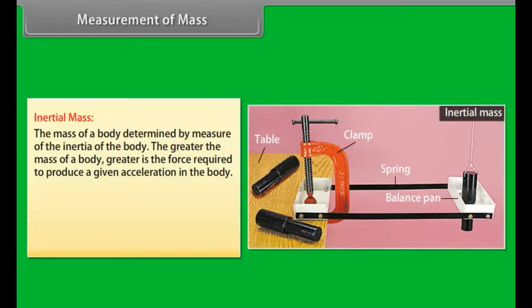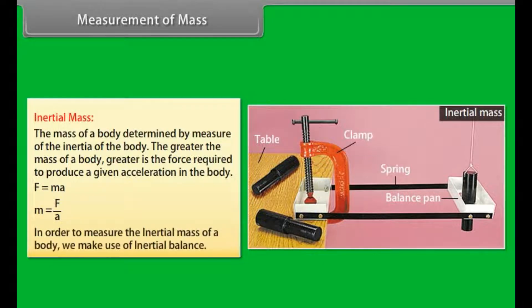Inertial mass. The mass of the body is determined by measure of the inertia of the body. The greater the mass of a body, greater is the force required to produce a given acceleration in the body. F = M × A, or M = F / A. Thus a very heavy body has a larger inertial mass than a light body. In order to measure the inertial mass of a body, we make use of inertial balance.